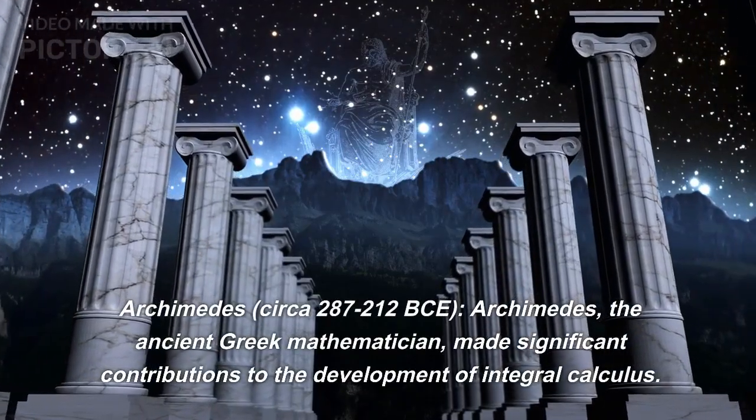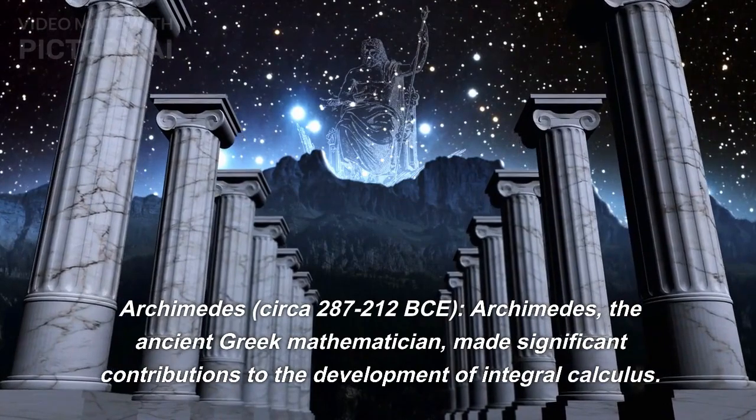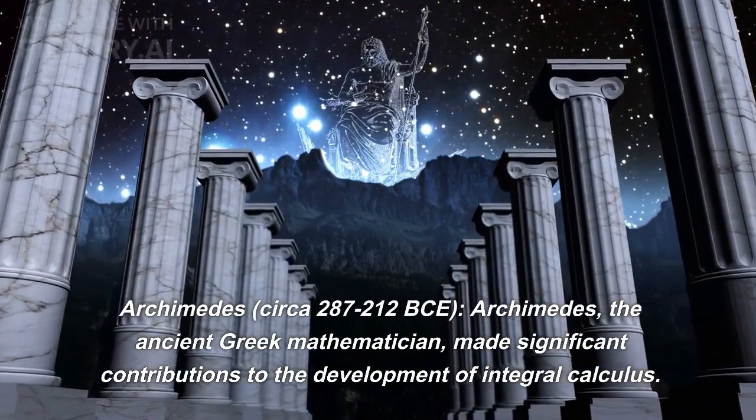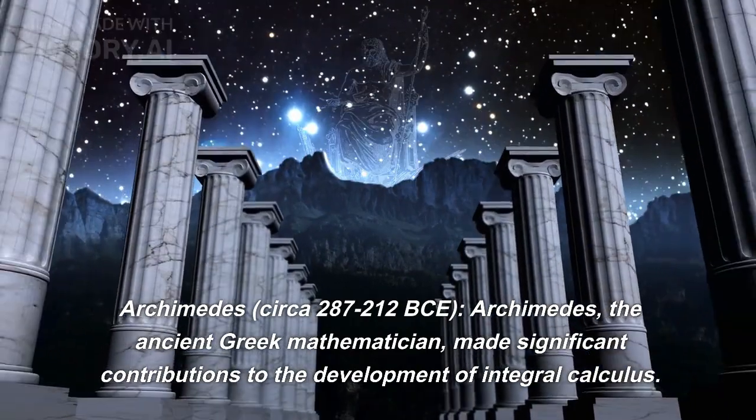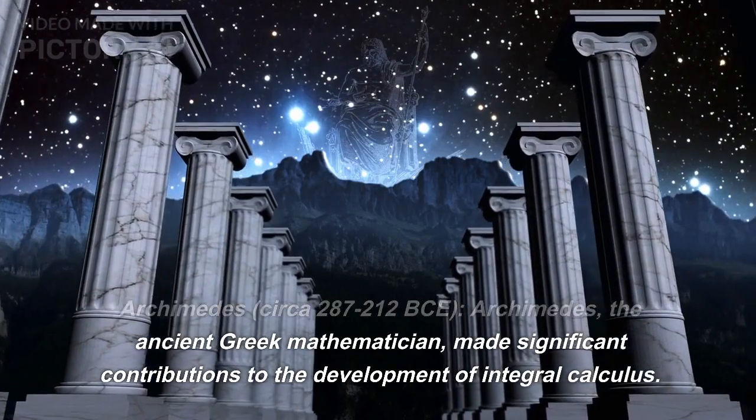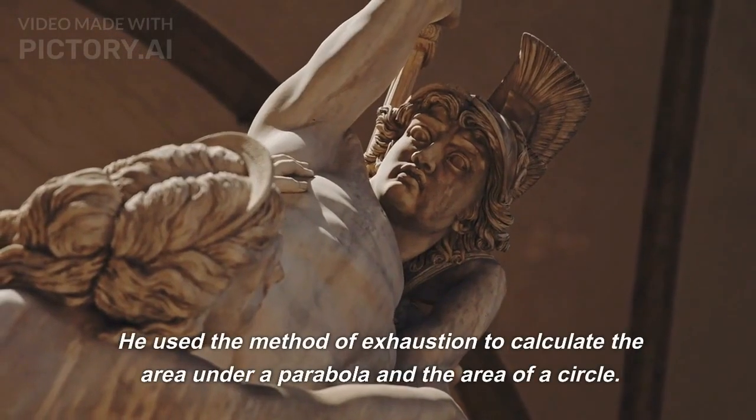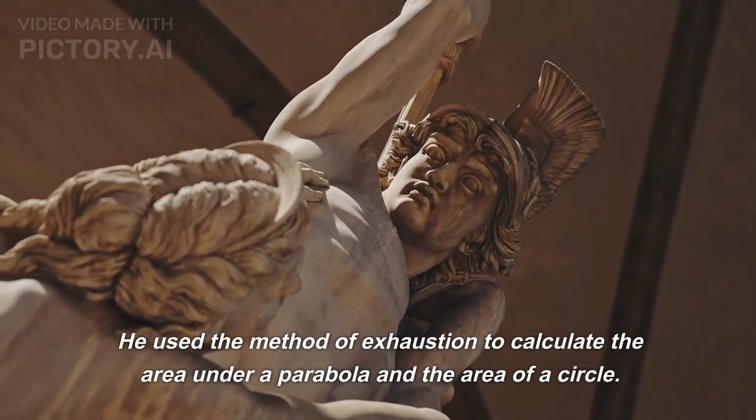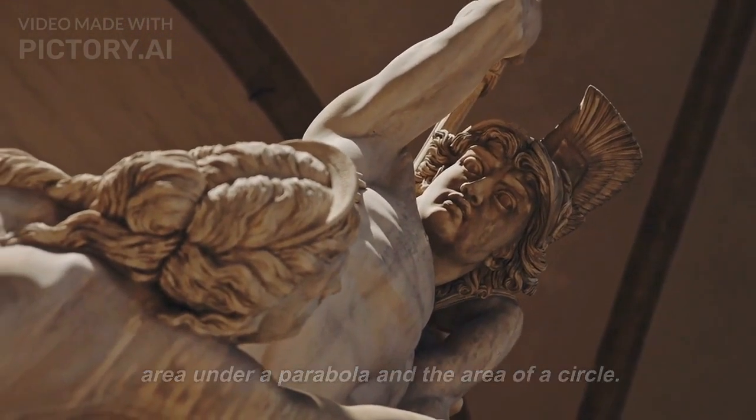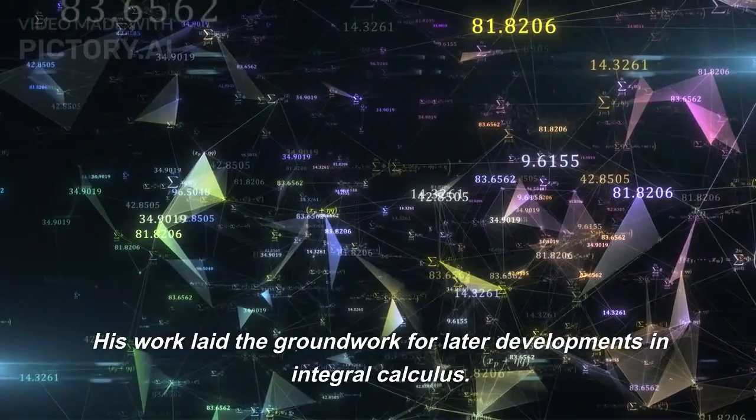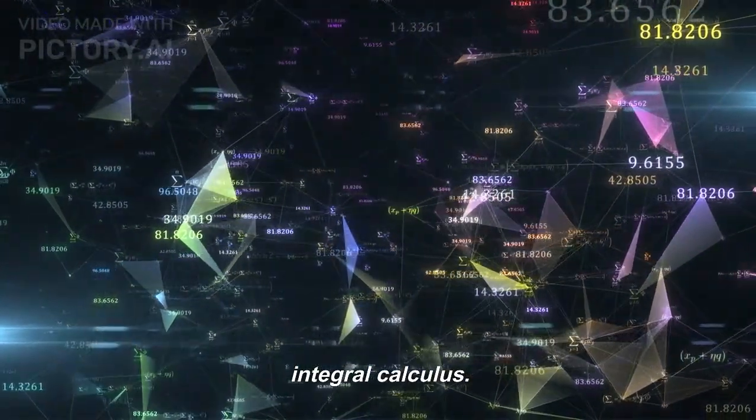Archimedes, circa 287-212 BCE. Archimedes, the ancient Greek mathematician, made significant contributions to the development of integral calculus. He used the method of exhaustion to calculate the area under a parabola and the area of a circle. His work laid the groundwork for later developments in integral calculus.